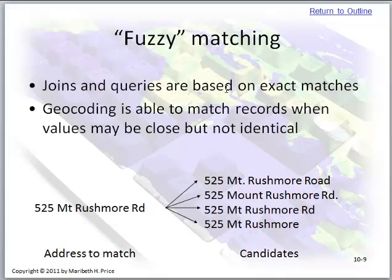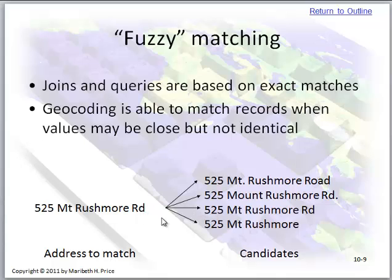Fuzzy matching — joins and queries are based on exact matches, whereas geocoding is matching records that are close but not identical. In this case we have an address of 525 Mount Rushmore Road, and the items on the right could be used to match that address. So what we're showing here is it doesn't have to be specific.